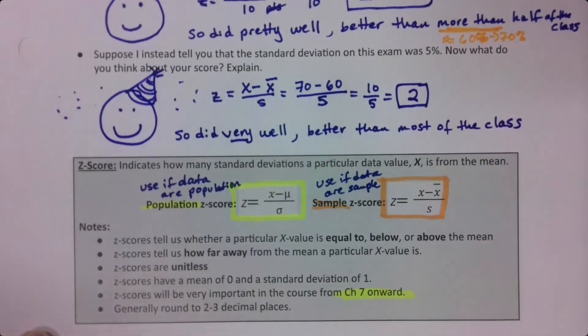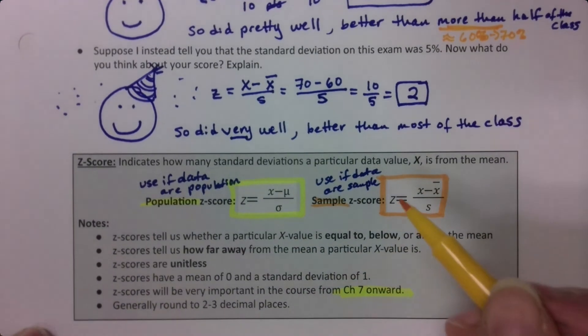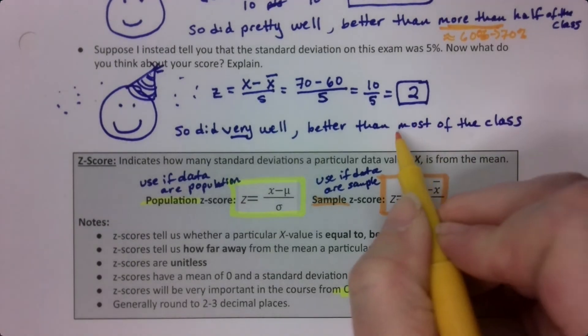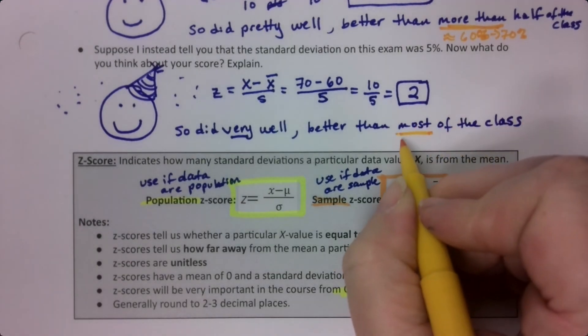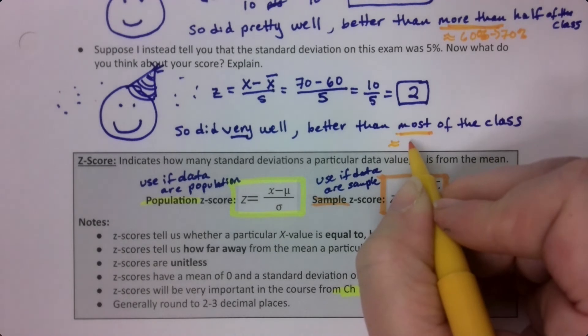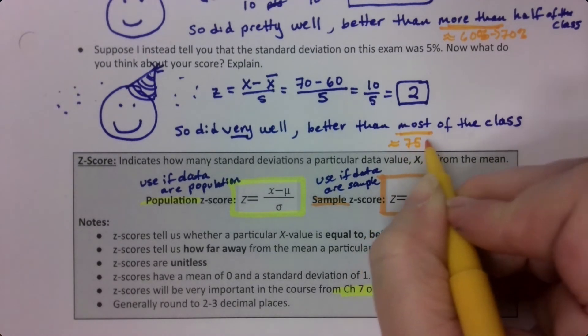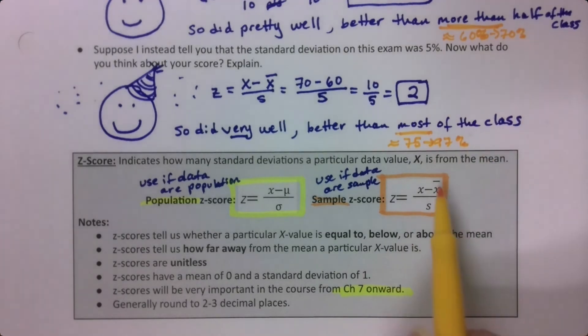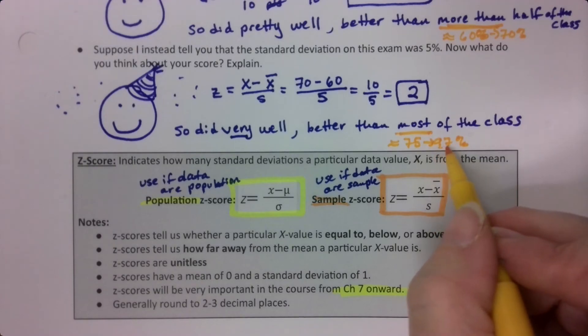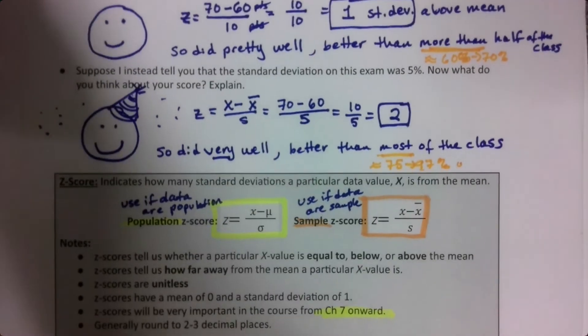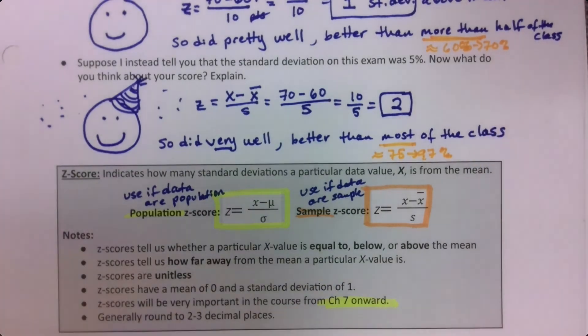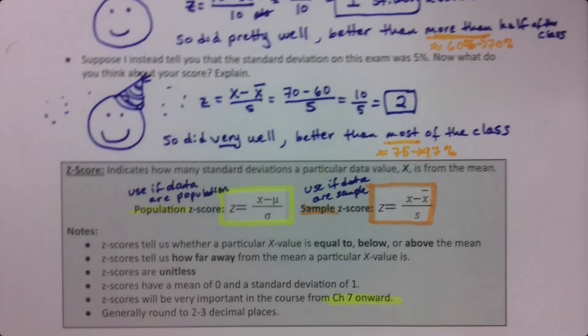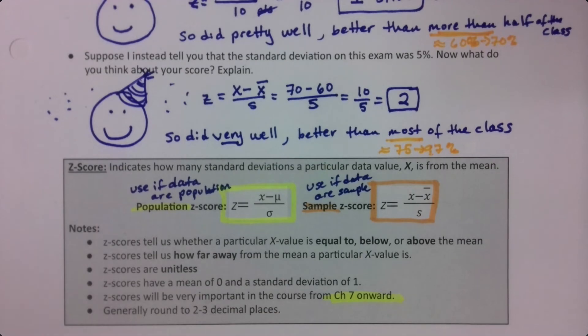Better than most of the students. How much better? Well, we're not going to get into this too much. There's a rule for this called Chebyshev's rule, but for your own benefit, you can understand it's about somewhere between 75 to 95% of the students, 97% depending on the shape of the distribution. So if it's symmetric, it'll be more like 97%. So that just gives you a sense of what I mean when I say most.